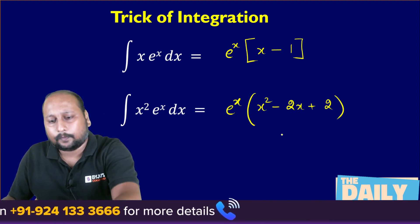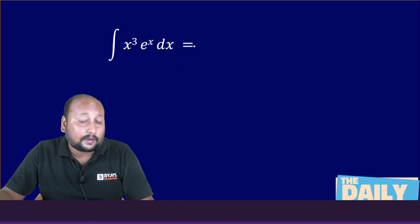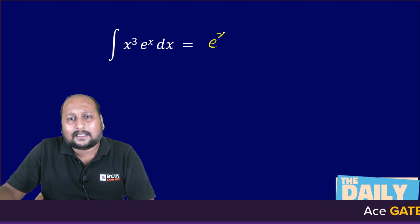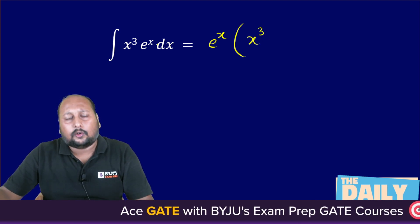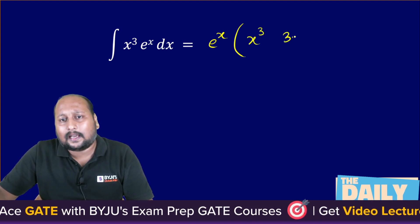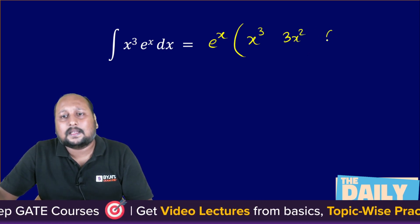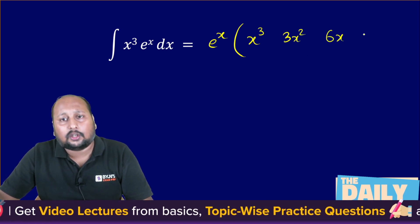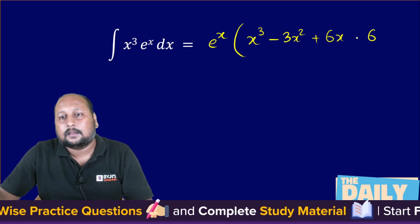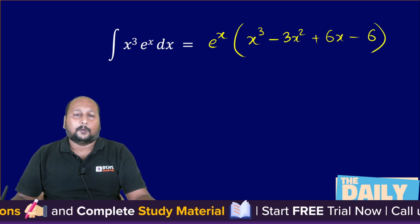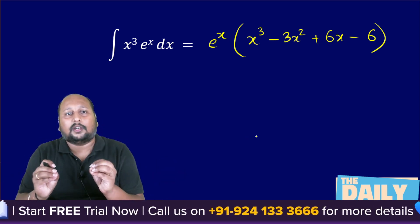Let's take one more example. If I want to integrate x³·eˣ dx: write eˣ as it is, write x³ as it is. The differentiation of x³ is 3x², the differentiation of 3x² is 6x, and the differentiation of 6x is 6. Write the opposite signs — minus, plus, minus. That's it! It's a very simple technique to find the integration in the easiest way possible.